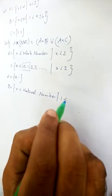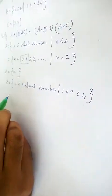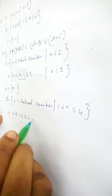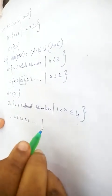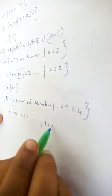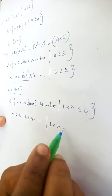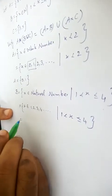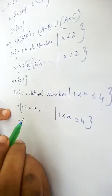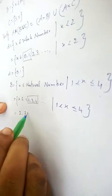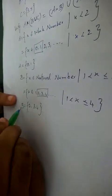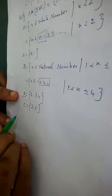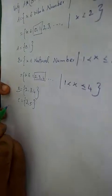Similarly we have to find the value of B. Here x is a natural number, and the condition given is x greater than 1 and also less than or equal to 4. So B equals {2, 3, 4}. Set C is given directly in the question as {3, 5}. Now we have to take the left hand side.